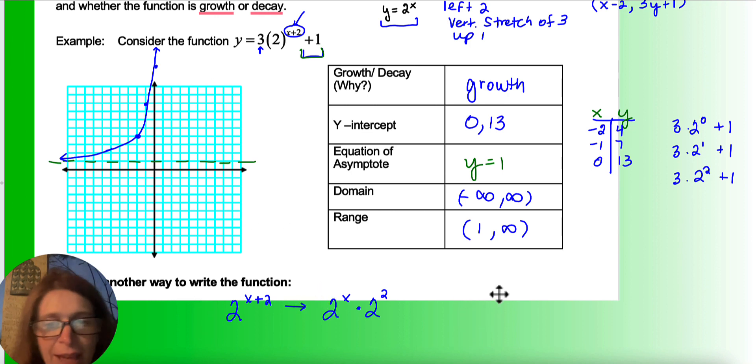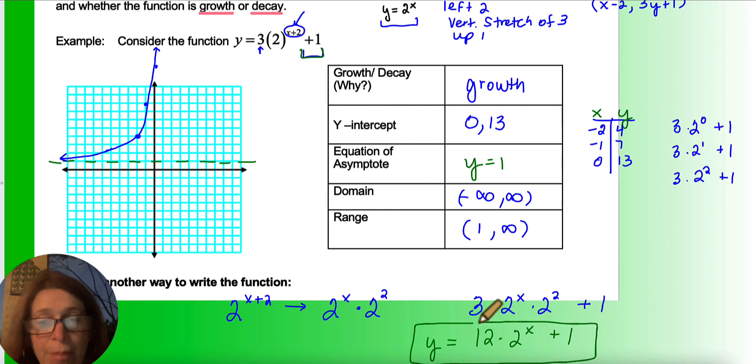So here's, think about that. I have now 3 times 2 to the x times 2 to the 2 plus 1. Multiplication says that I can kind of reorder this. So this would be 3, 2 squared, which is 4, 4 times 3, which is 12. So I could write the function. This function is exactly the same as this function.